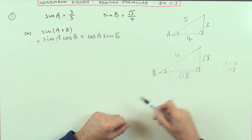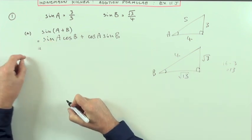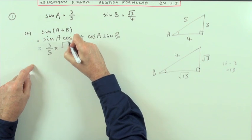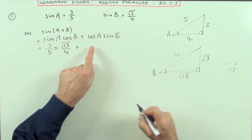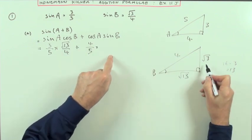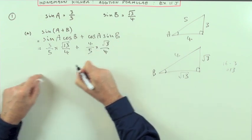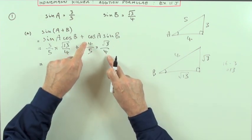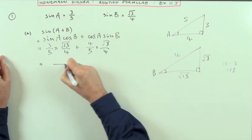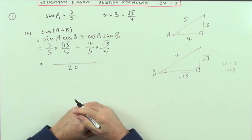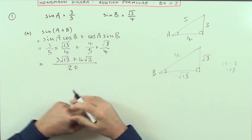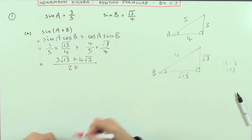So I can go back to this and finish this off. Sin(A+B) = sin(A)cos(B) + cos(A)sin(B) = (3/5)(√13/4) + (4/5)(√3/4). Don't get tempted into cancelling these out because then you'll have different denominators for the two fractions. Just leave them alone - they're both out of 20, so as a single fraction that's (3√13 + 4√3)/20. There's not a lot I can do about that, and that would do as the answer to part (a).